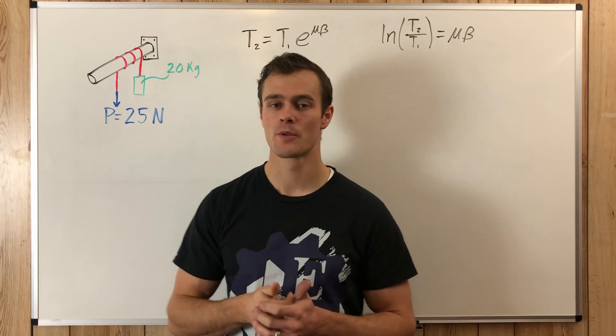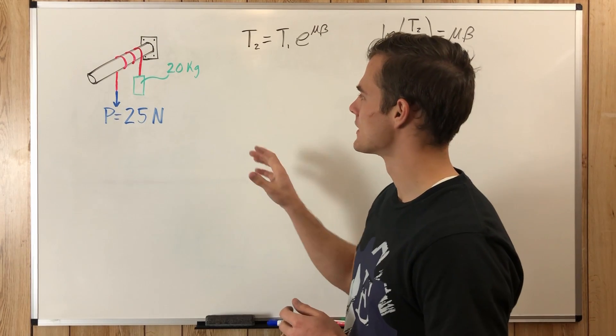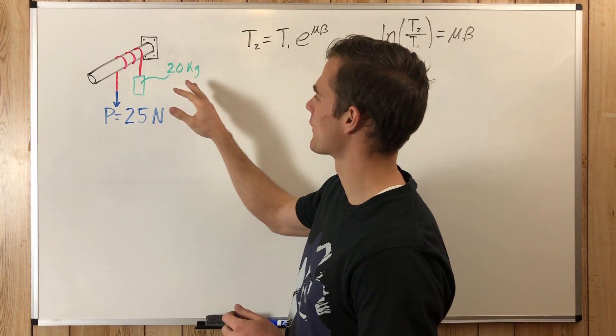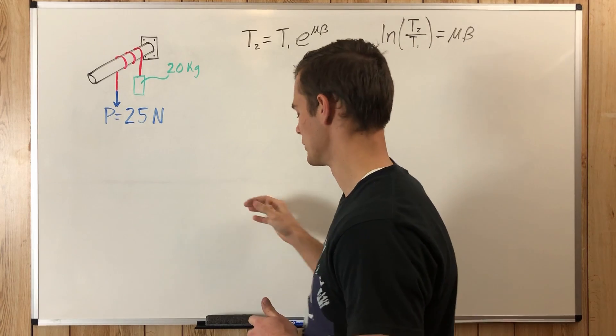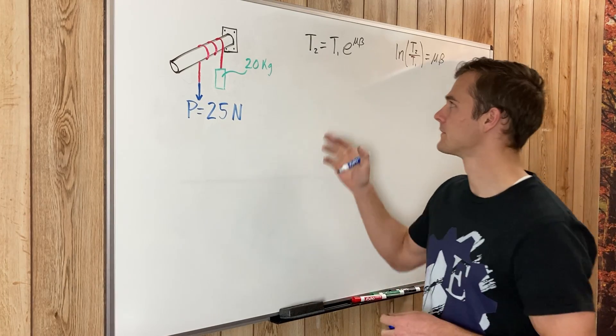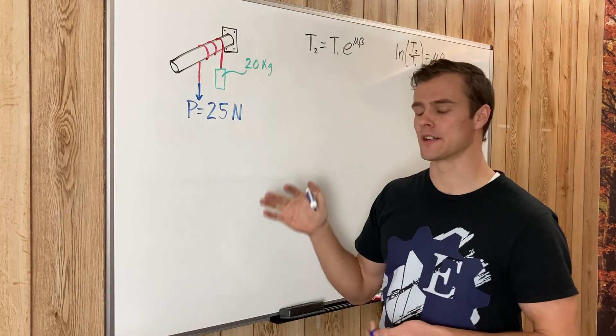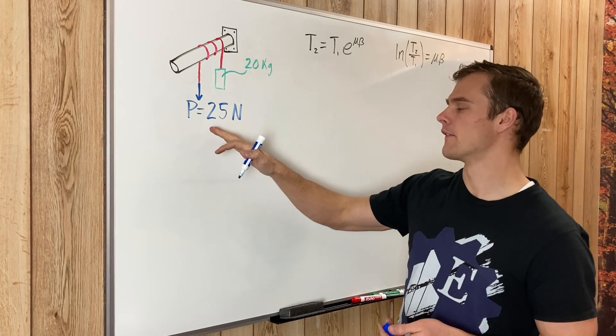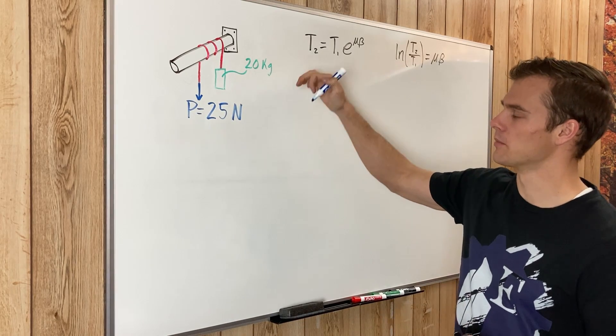So the first thing we want to do is we need to see which force, which force P or from the weight, is going to be T1 or T2. Now remember that T2 is going to be in the direction of impending motion. Now that's kind of confusing here with a force P pulling down this way, but you also have the weight pulling down this way.